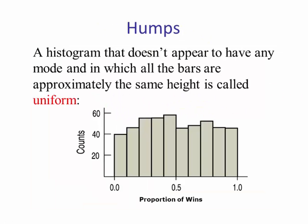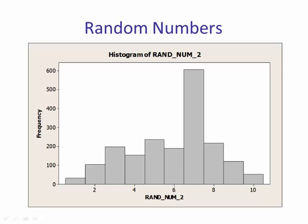If the histogram does not appear to have any humps or modes, then we say the distribution is uniform, where approximately each band has the same frequency. Here's an example using the data from the student survey — this is the random number variable. We expected the random numbers to be uniform. The question asked: pick a number between 1 and 10.